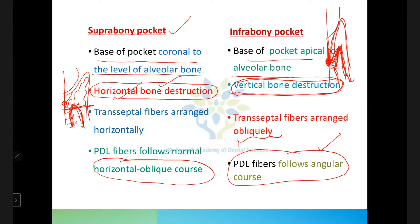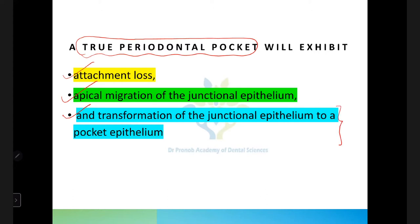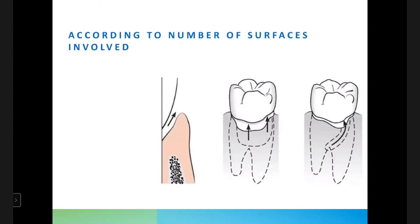For a true periodontal pocket, there must be attachment loss, apical migration of the junctional epithelium, and transformation of the junctional epithelium to a pocket epithelium. There is another classification: simple pocket, compound pocket, and complex pocket.